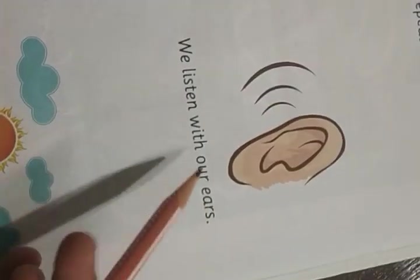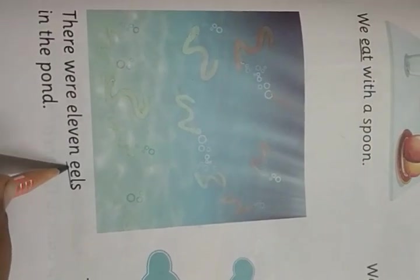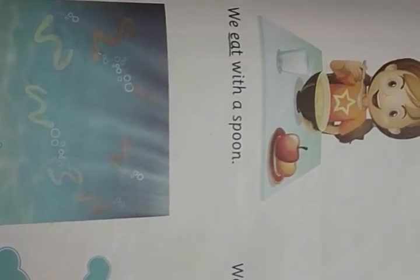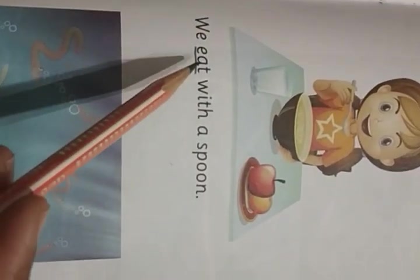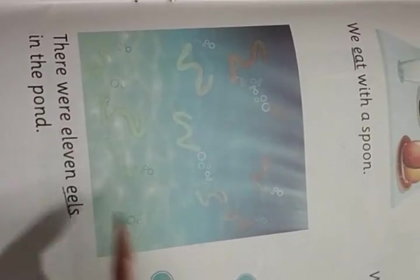We listen to our ears. Ears — the sound is E. There were eleven eels in the pond. Eels — E sound. The sun rises in the east. So the words are: eat, ears, eels, and east — all have the long E sound.